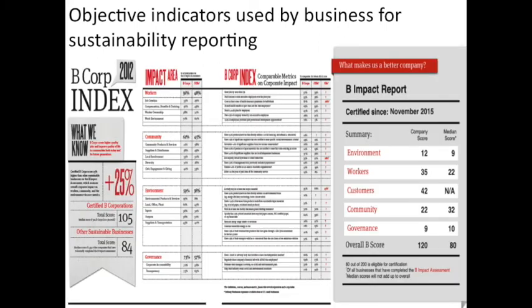Another effort worth looking at is B Corp. B Corp is a group that works with businesses to help them understand how to have a wider impact that encompasses economic impact but also community and the environment. While their measure of well-being or success is much wider than just profit, it's not as wide as the GRI or certainly the UK's ONS well-being metrics. Nevertheless, these two efforts are worthy of note because businesses are starting to use these metrics not only to manage and measure their performance but also to differentiate themselves in the marketplace.